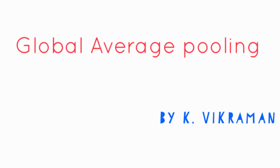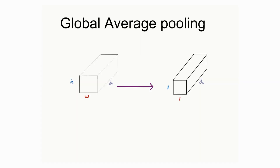In this quick lecture I'm going to discuss what global average pooling means. Before I dive into the properties, I'm going to quickly show what a GAP layer does. Global average pooling is also sometimes called a GAP layer.